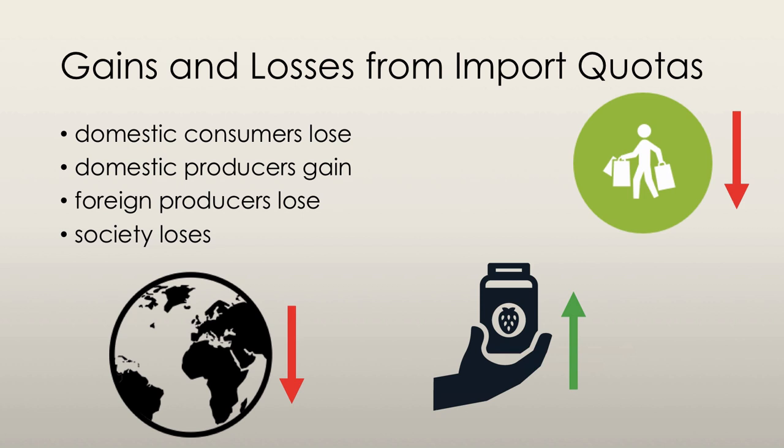When we look at gains and losses, we will consider the new prices and quantities just like we did for tariffs. Domestic consumers lose because they face higher prices and are thus able to buy less of the good. Domestic producers gain because they are able to sell more of the good for a higher price.